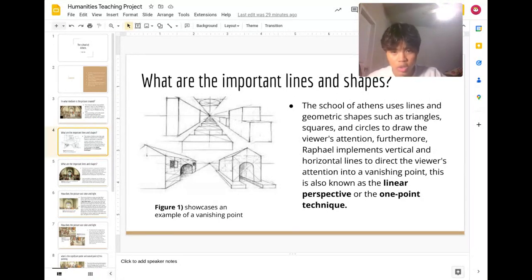An example of this vanishing point can be seen in Figure 1. In this picture, the black dot in the middle is called the vanishing point drawn by the horizontal and vertical lines. This vanishing point is also known as the linear perspective or the one point technique.